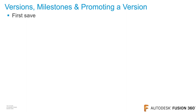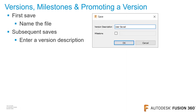The first time that you save a file, you're going to give the file a name. On subsequent saves, enter a version description that states what was changed — this description appears next to the version number in the data panel. When saving a file, you also have the option to create a milestone. When a file is saved as a milestone and inserted into another assembly, only versions set to milestone will be updated in the referenced assemblies. This prevents assemblies from being updated every time a referenced file is saved.